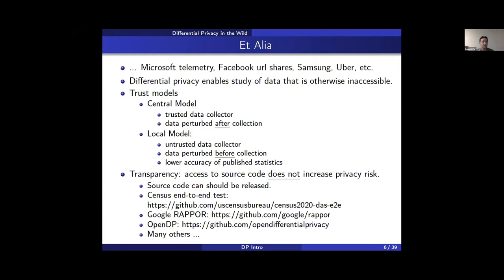These implementations include the disclosure avoidance code from the census end-to-end test, the code that Google uses to analyze browser settings, and OpenDP — an open differential privacy library that implements many of the algorithms in the literature — among many others.